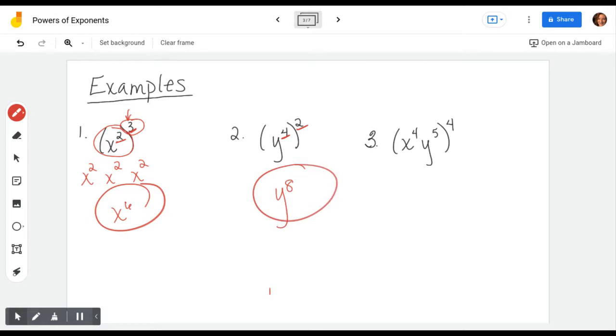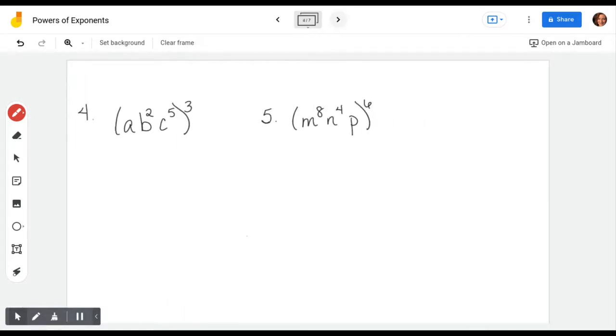When you have more than one variable it's kind of like when we did the distributive property. You're distributing exponents to exponents. x to the fourth raised to the fourth, multiplying it becomes x to the 16th. y to the fifth raised to the fourth, multiply it becomes y to the 20th. You just keep the base, you multiply the exponents, that's all there is to it.